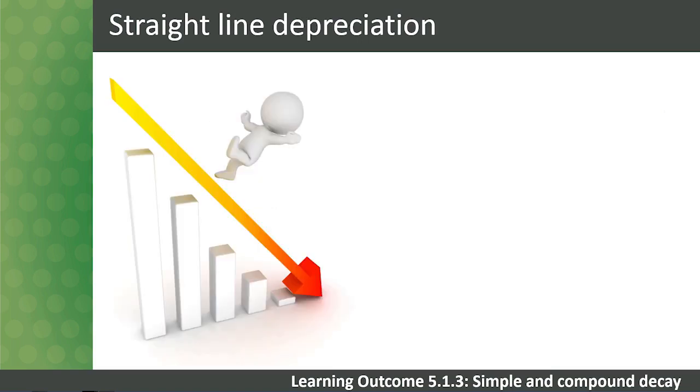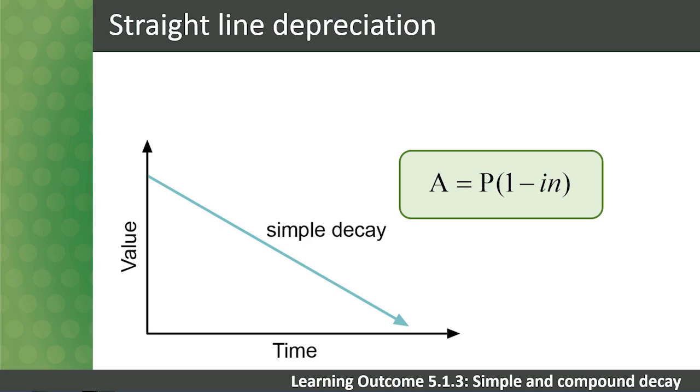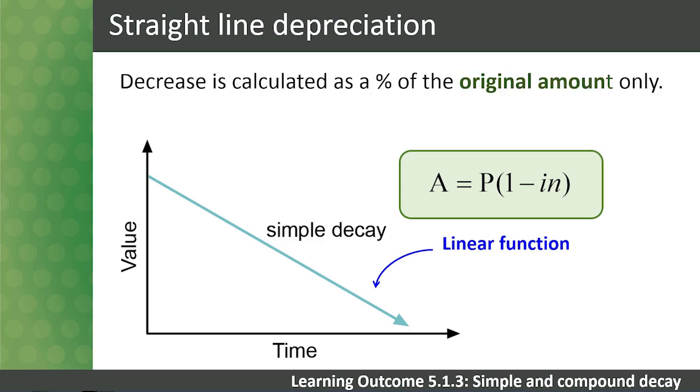When calculating depreciation on a straight line basis, we use the simple depreciation formula, which is A = P(1 - iN). Here we can see a graphic representation of Straight Line Decay. As time increases, so the value decreases in a linear fashion. The decrease in value is calculated as a percentage of the original value only. Straight Line Depreciation can be compared to simple interest, except that here the value is decreasing at a constant rate instead of increasing.